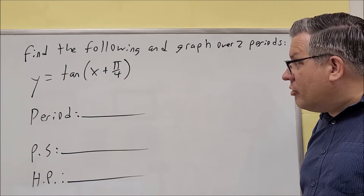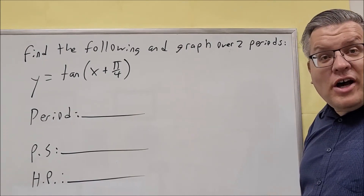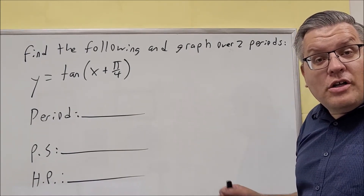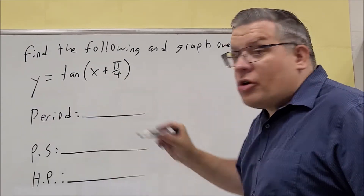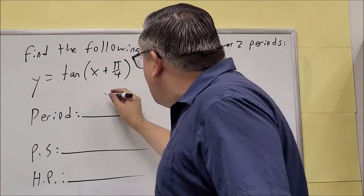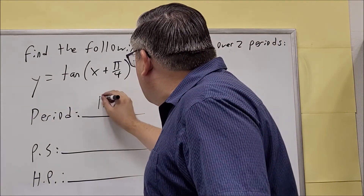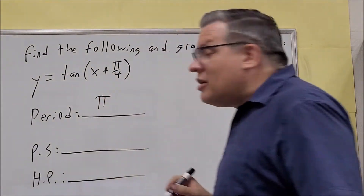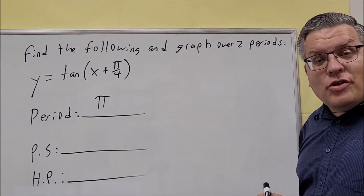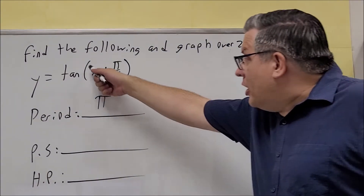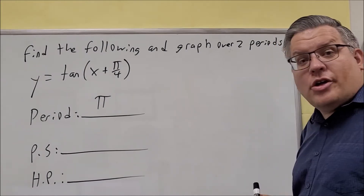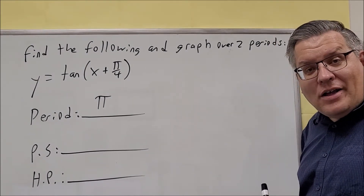The first thing we want to do is find the period. The period is always pi divided by the number in front of the x. In this case, the period is just going to be pi, because if we do pi divided by 1 — the coefficient in front of x — we get pi as our answer. So the period is pi.